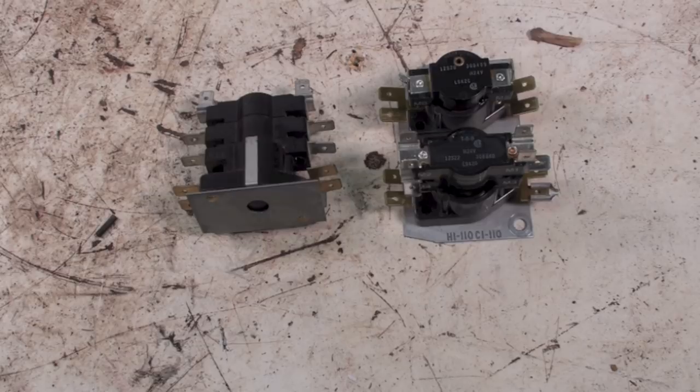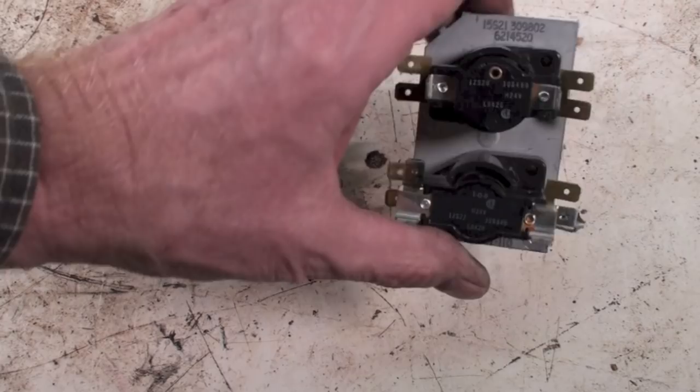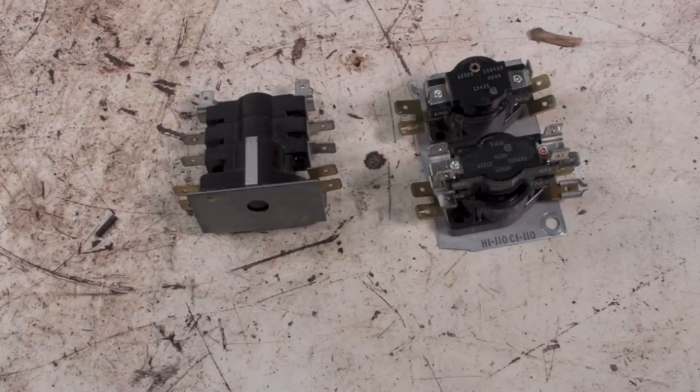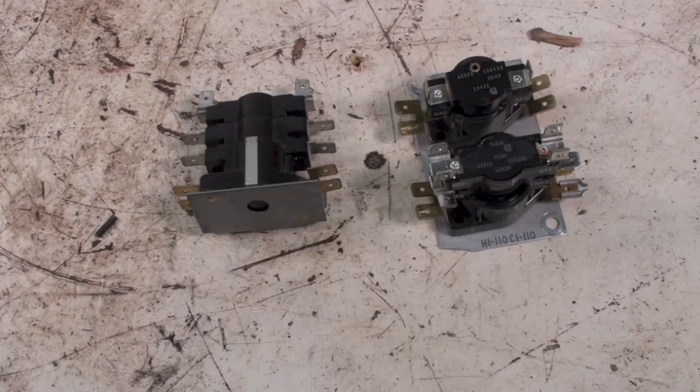So you need to make sure when you put these in, if you're not putting exact replacements or you're putting something that's not on the same plate. See, this is all on the same plate. And you got to make sure that they time off right. I mean, I would check them anyway to make sure that everything cycles right, but these sequencers, because they're a time-delay relay, you got to be aware of the timing on these things.